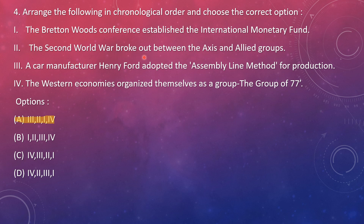Next comes the Second World War breaking out between the Axis and Allied groups — that is correct. Then the Bretton Woods Conference established the International Monetary Fund. Finally, the western economies organized themselves as the Group of 77. So the chronological order matches option A, which is the right answer.